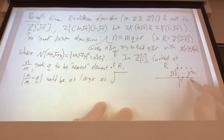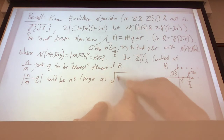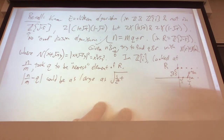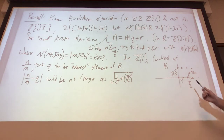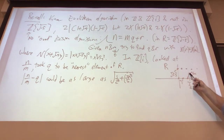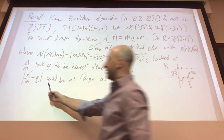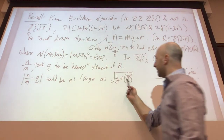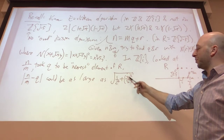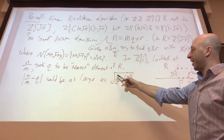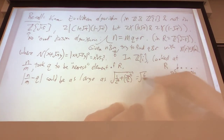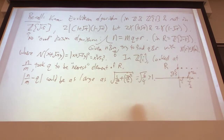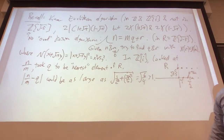We could go halfway in the X direction — √(1/2)² — plus halfway in the Y direction — √(√5/2)² = √5/2. So the maximum distance is √(1/4 + 5/4) = √(6/4). And 6/4 is bigger than 1, so its square root is bigger than 1. So this distance is bigger than 1.